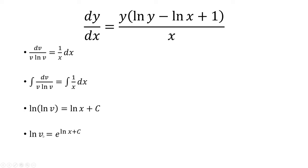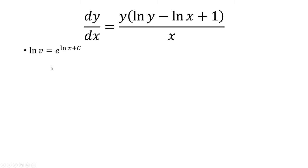So I have ln of v equals to e to ln of x plus c. And at this point, I can break up e to ln of x plus c as e to ln of x times e to the c. And e to ln of x is just x. And then e to the c is some constant. So I just called it c here.